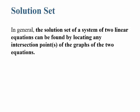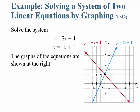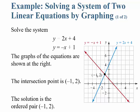In general, the solution set of a system of two linear equations can be found by locating the intersection point or points of the graphs of the two equations. For example, solving y = 2x + 4 and y = -x + 1: in blue is y = 2x + 4 and in red is y = -x + 1. You can see they intersect at the point (-1, 2). This intersection point is the solution to the system because this ordered pair solves both equations at the same time.